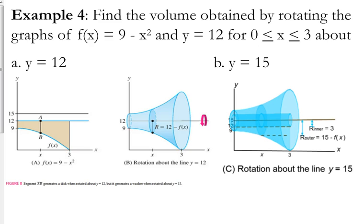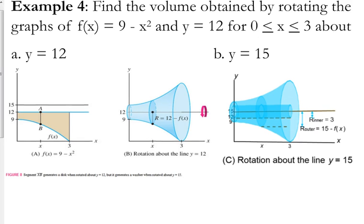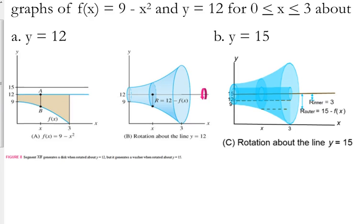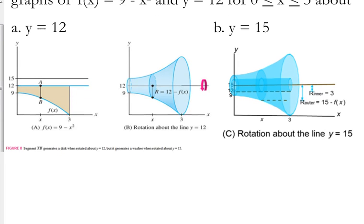All right. What if the radius, or what if we're rotating about a line above our region? So let's look at this one. We've got f of x is 9 minus x squared. The horizontal line y equals 12. We're going between 0 and 3. And we're going to go about the line y equals 12 and about the line y equals 15. So we're going to do it twice here.